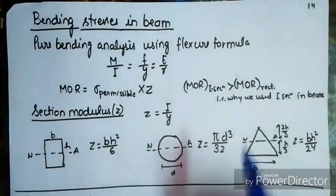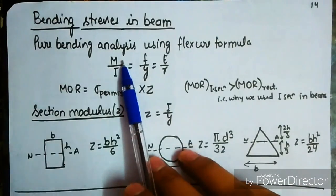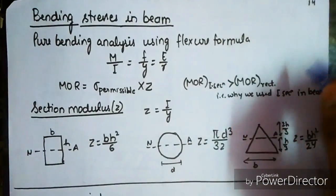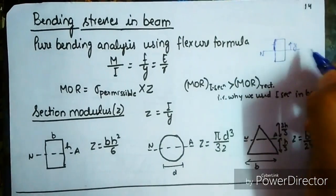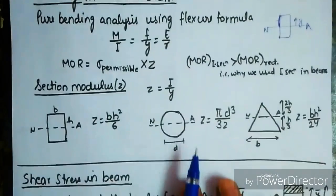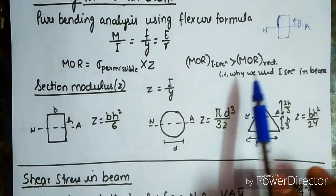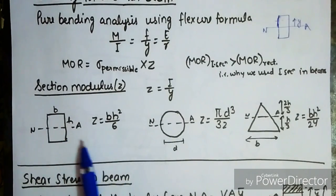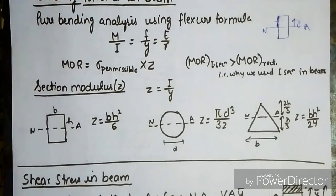For bending stresses in beams under pure bending, the flexure formula is M/I equals f/y equals E/R, where M is bending moment, I is moment of inertia, f is stress, y is the height from the neutral axis, E is modulus of elasticity, and R is the radius of curvature. Moment of resistance equals sigma-permissible times Z (section modulus). MOR of I-section is greater than MOR of rectangular section. Section modulus Z equals I/y. Values: rectangular section Z equals bh²/6; circular section Z equals pi-d³/32; triangular section Z equals bh²/24.